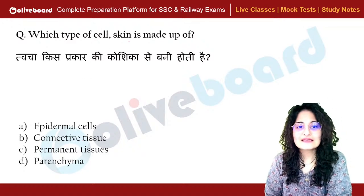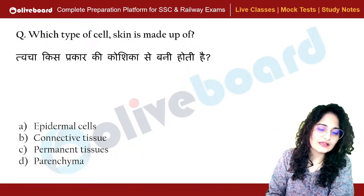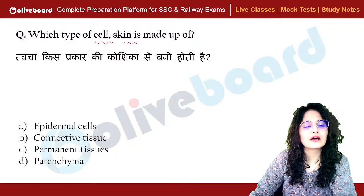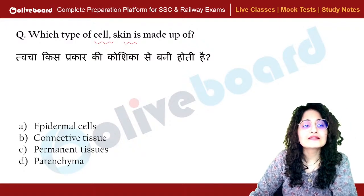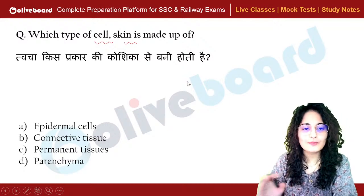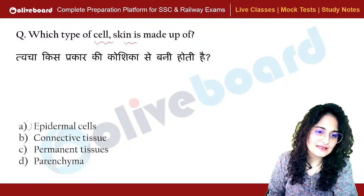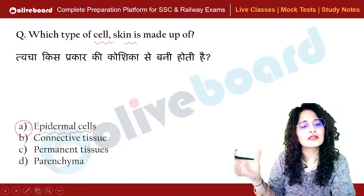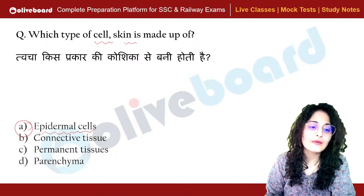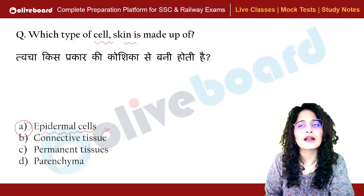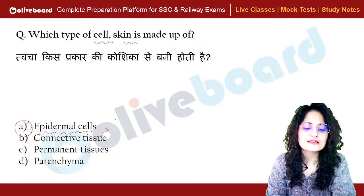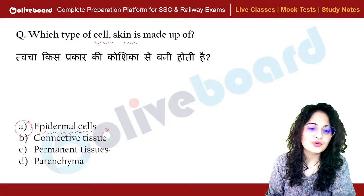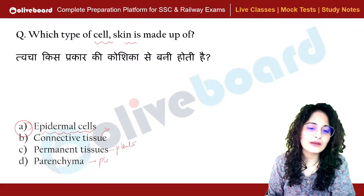Which type of cells is skin made up of? Skin is made up of epidermal cells. Different shapes are made depending on where the cells are — they change shape accordingly. Connective tissues are also made up of skin; connective cells come under the segment of tendons and ligaments.